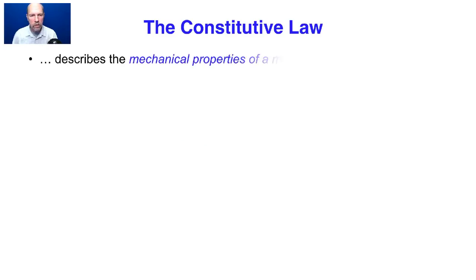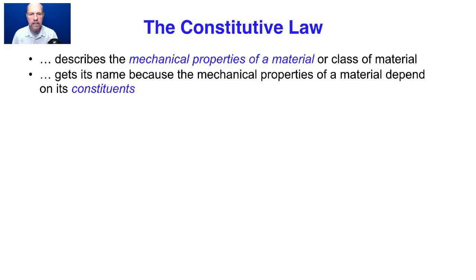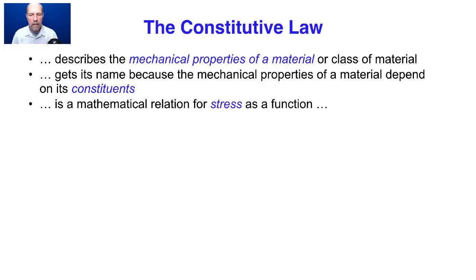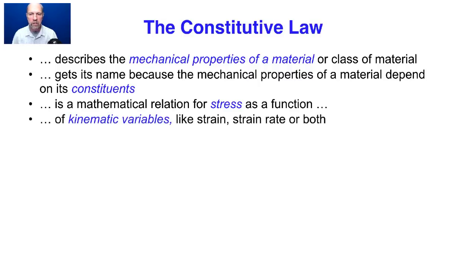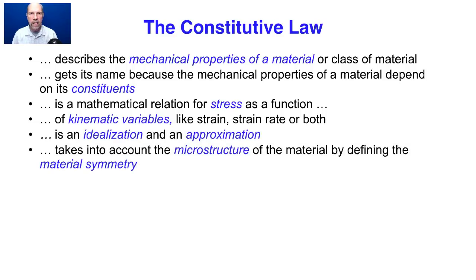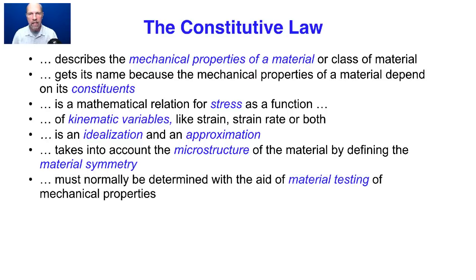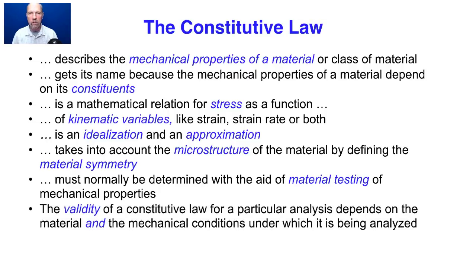The constitutive law describes the mechanical properties of a material or class of material, and gets its name because the mechanical properties depend on its constituents. It is a mathematical relation for stress as a function of kinematic variables such as strain, strain rate, or both. It is an idealization and approximation that takes into account the microstructure and material symmetry. The constitutive law must normally be determined with the aid of material testing, and its validity depends not only on the material itself but also on the mechanical conditions under which it is being analyzed.